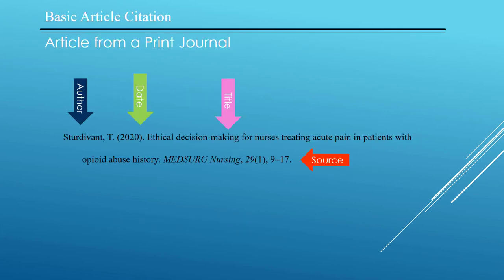Let's start with the basic article citation — you're going to be citing a lot of articles. You start with the author, last name first, followed by a comma, then first initial, period. Then the date of the article in parentheses, followed by a period. Then the title of the article in regular font with the first word of the title and the first word of the subtitle and any proper nouns being the only words capitalized, followed by a period.